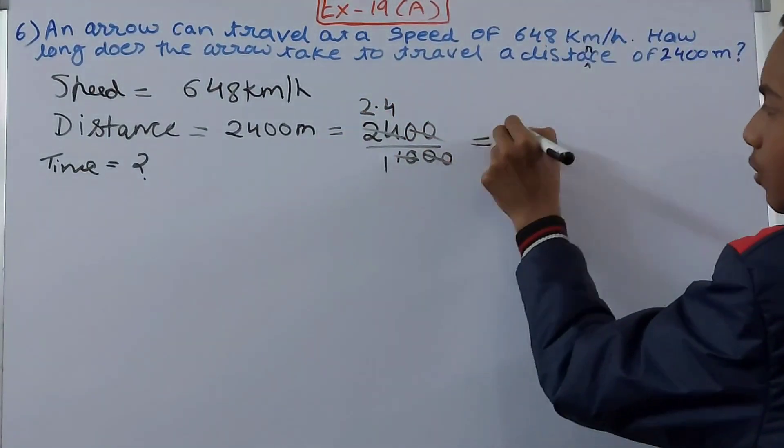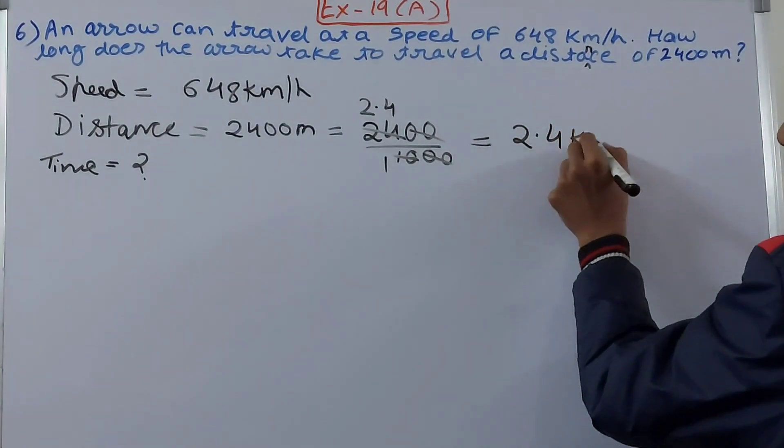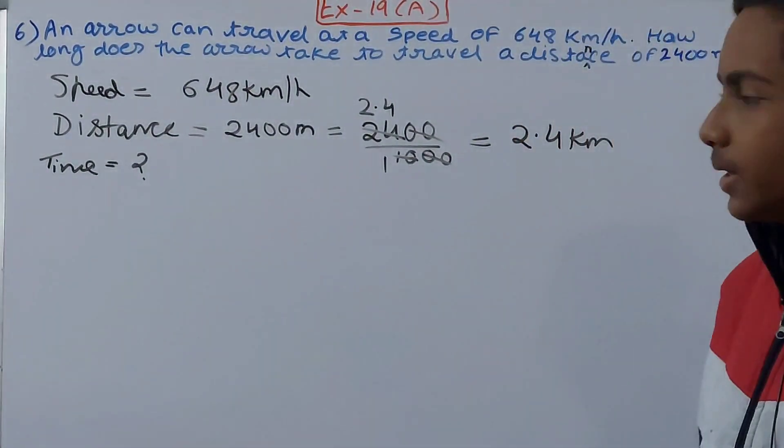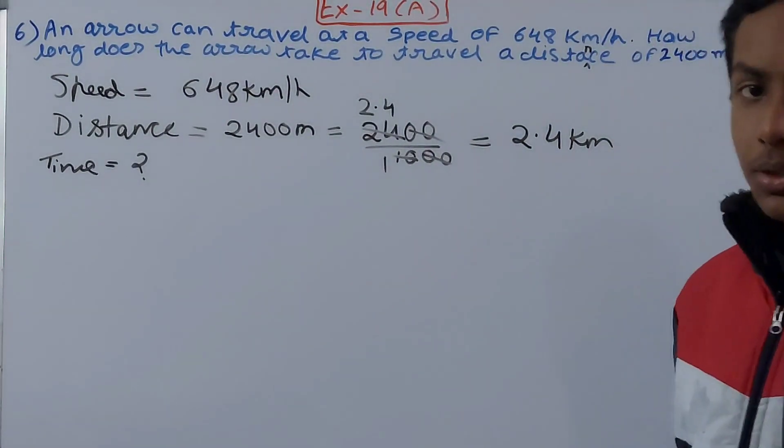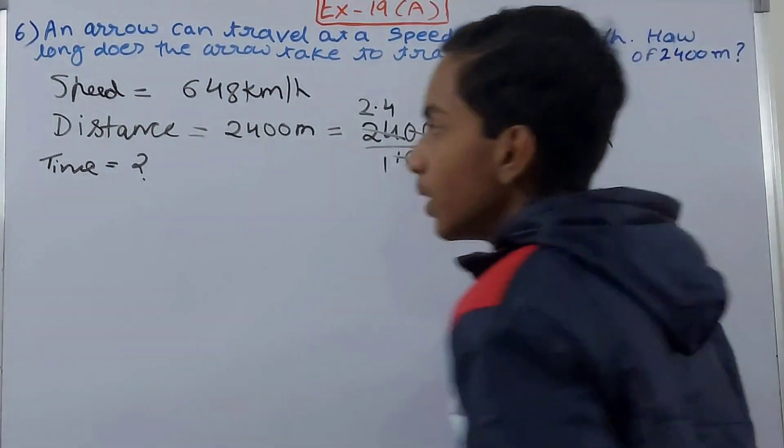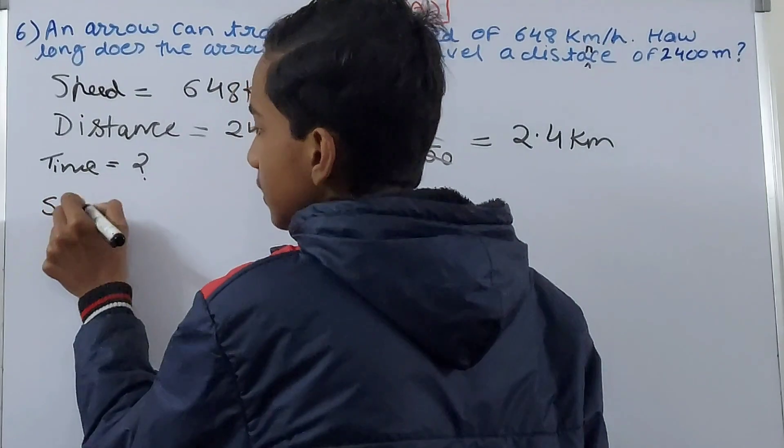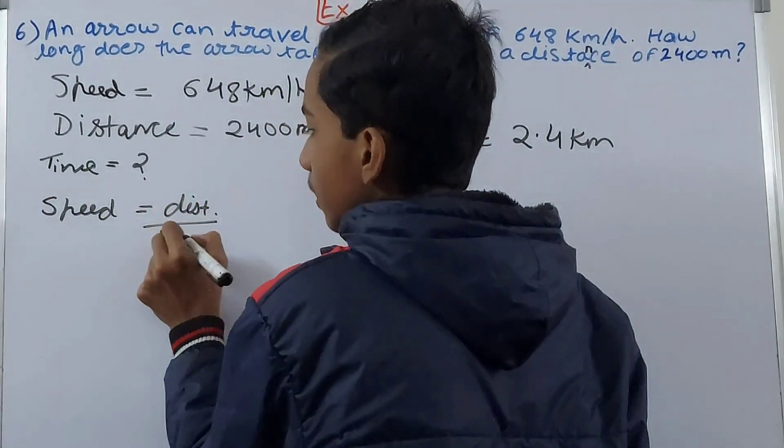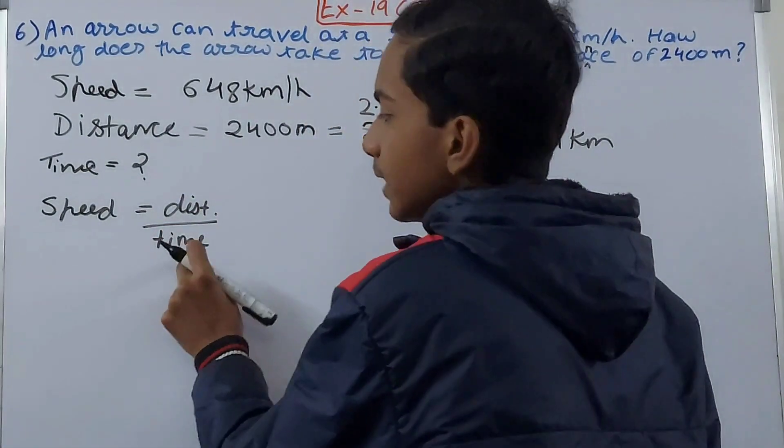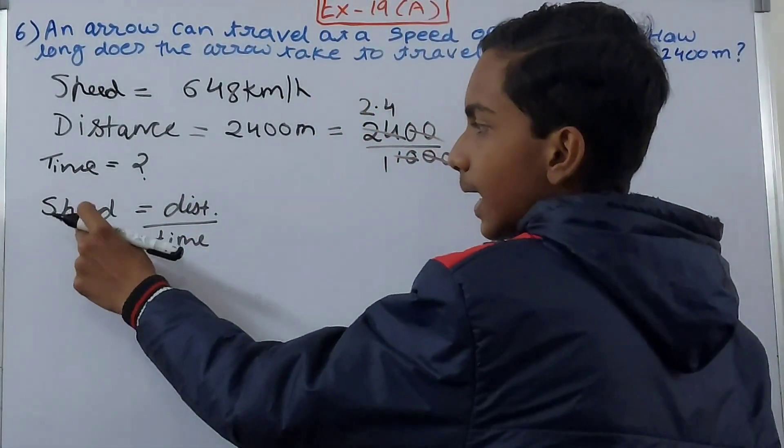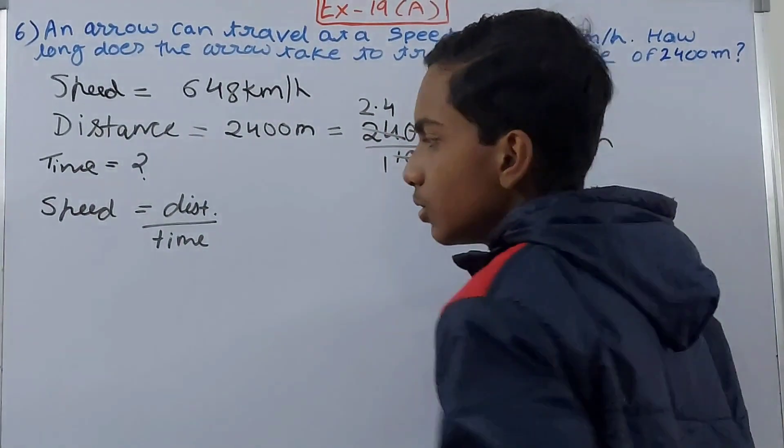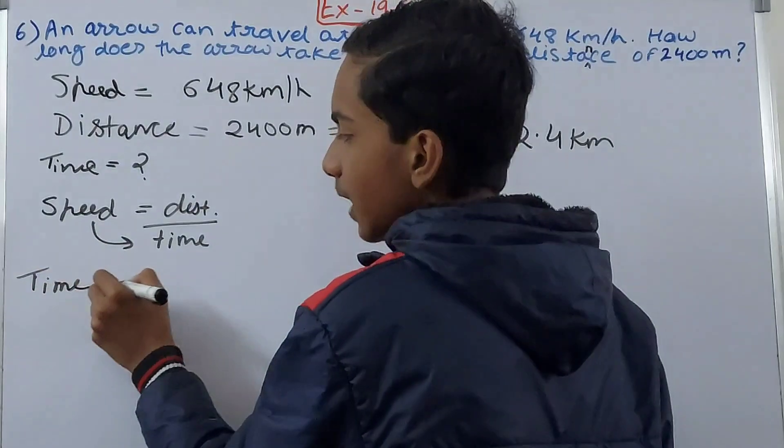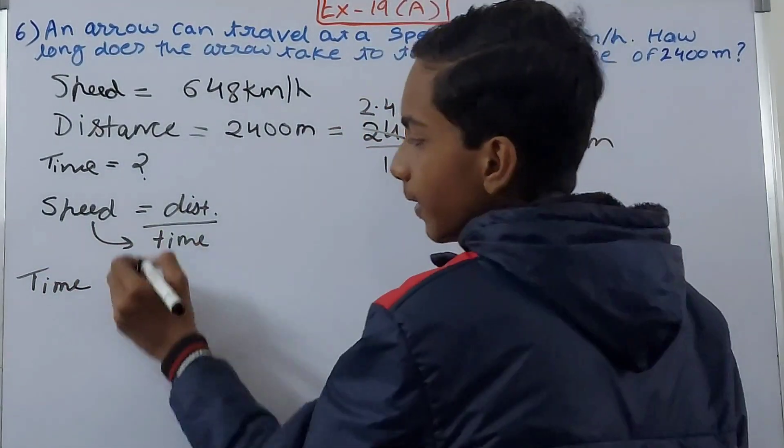Now you see that we have to find the time, so use the same formula that we have here: speed equals distance upon time. So this time will go here and speed will come here. So what do we get now? Time equals distance upon speed. This is what time is equal to.